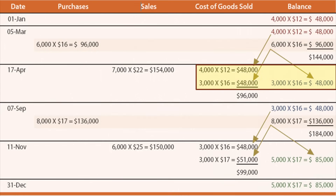Then we had a sale of 7,000 units on April 17th. Those 7,000 units, first in first out, consist of the 4,000 at $12, and then from the 6,000-unit layer, 3,000 are assumed to be sold and 3,000 remain in ending inventory. The cost of goods sold on that date totals $96,000, on a day when we had sales of $154,000.